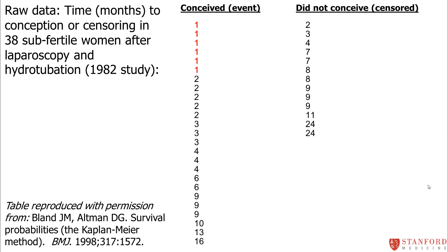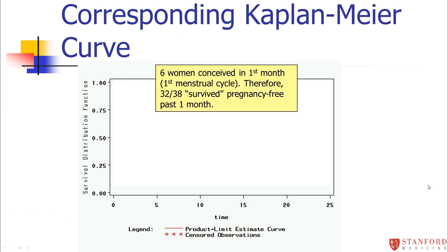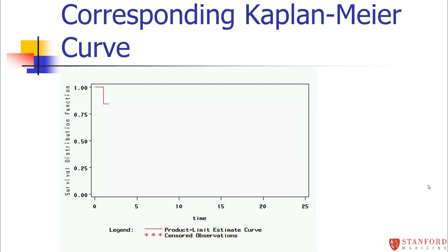In the first month, women can only get pregnant once a month, so the first cycle: six women conceived. Therefore 32 out of 38 survived pregnancy-free past the first month. We drop the curve down — the survival probability of not getting pregnant is 84%. We drop the curve down to 84%, which is the survival probability of making it past one month without getting pregnant.